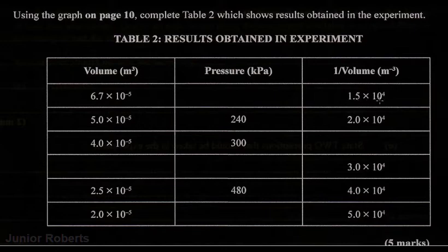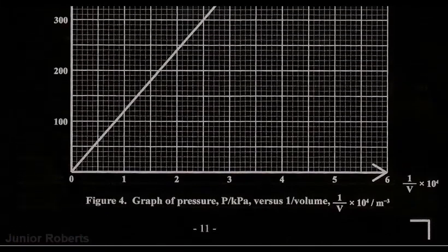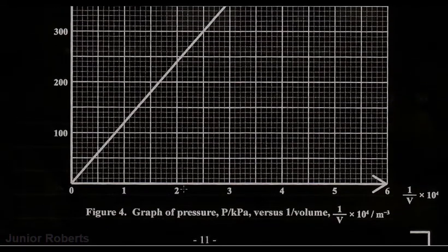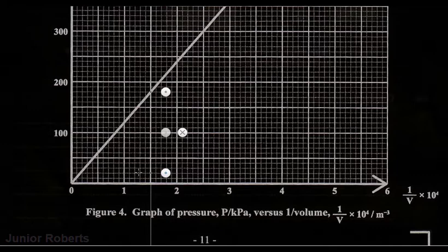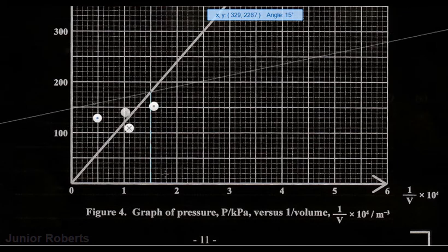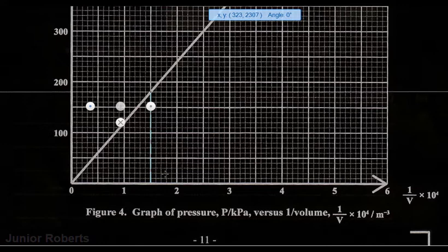So we're looking for 1.5 times 10 to the 4. So if we go here, this is 1 and this is 2, so halfway between there will be 1.5. So if we go to 1.5 and we go up to our line of best fit, and then we'll go across. I'll just put my ruler in place to guide me. So I have 1.5 and we go up like this.